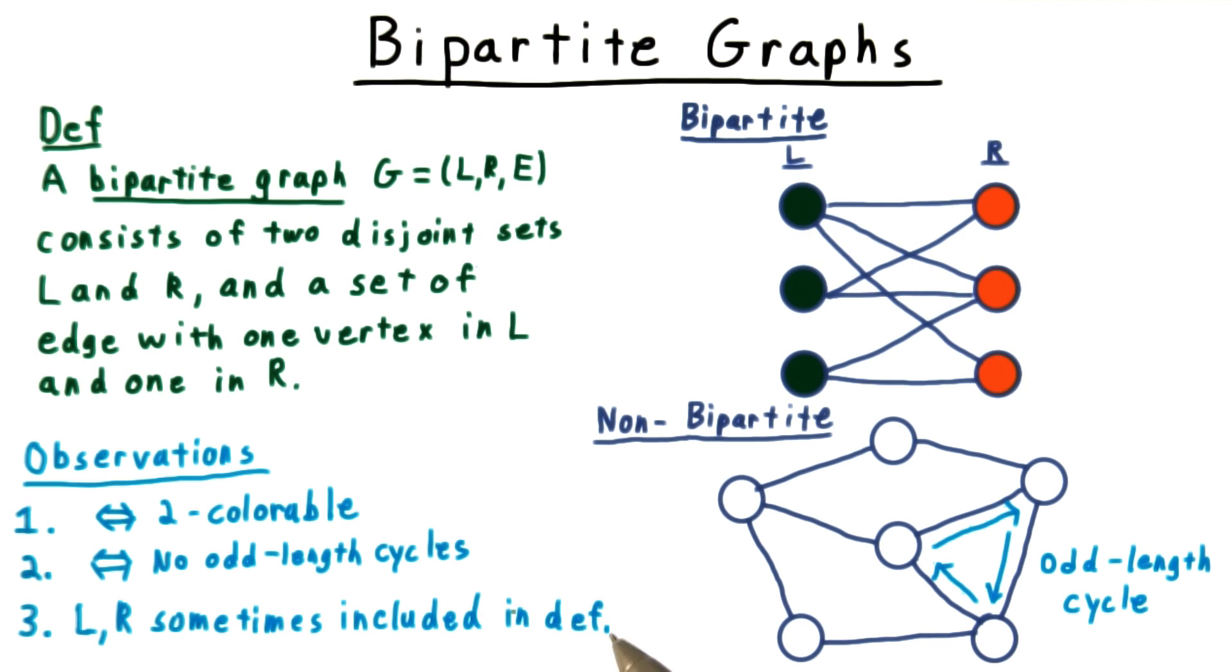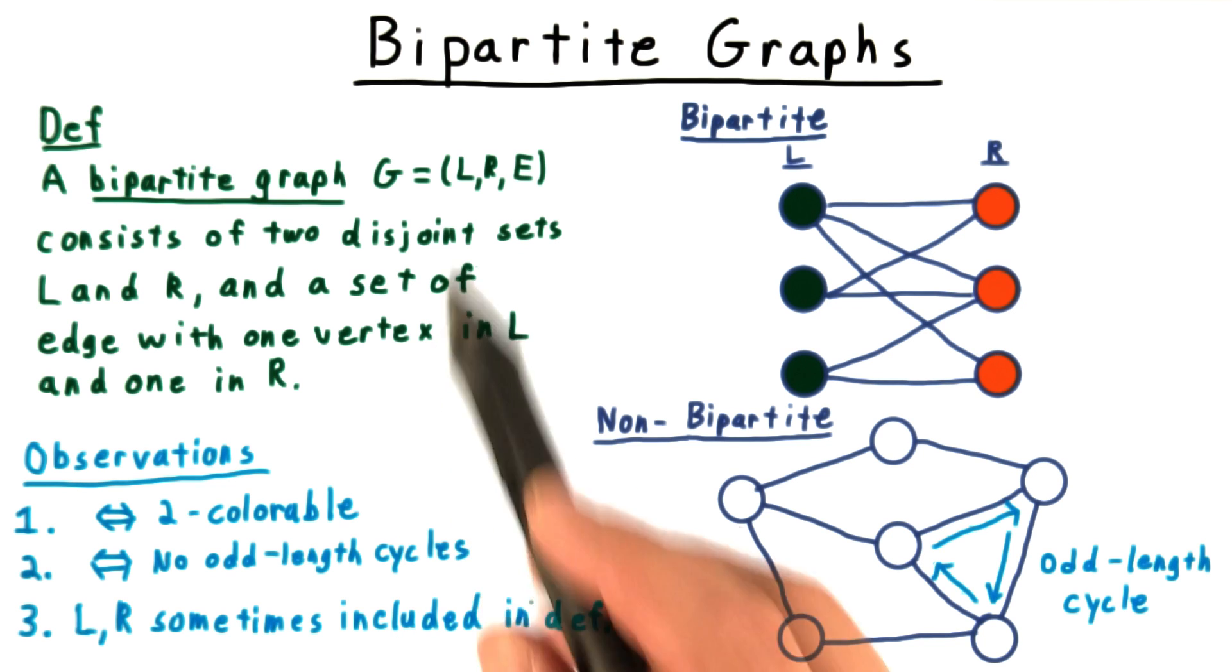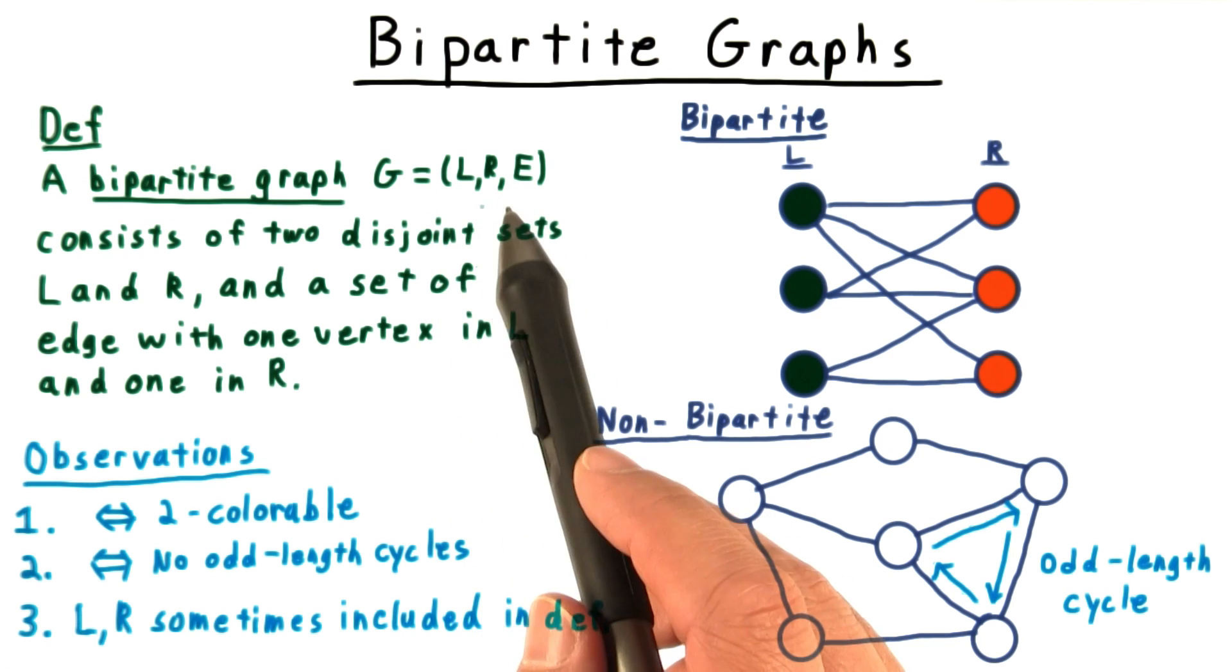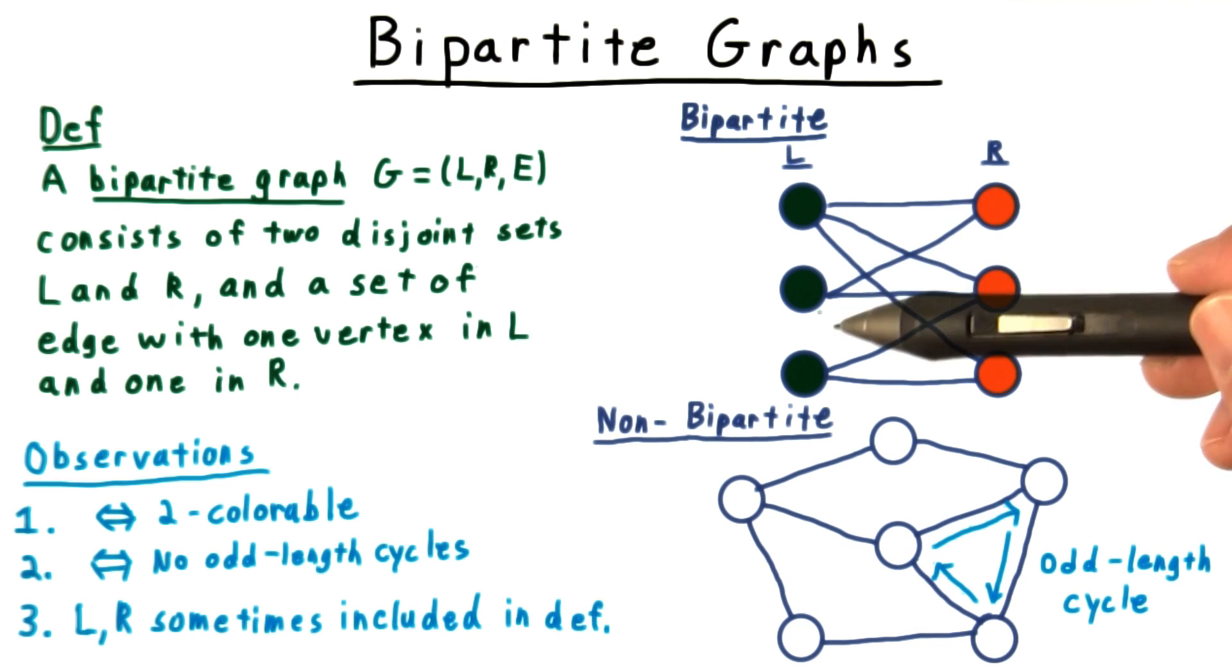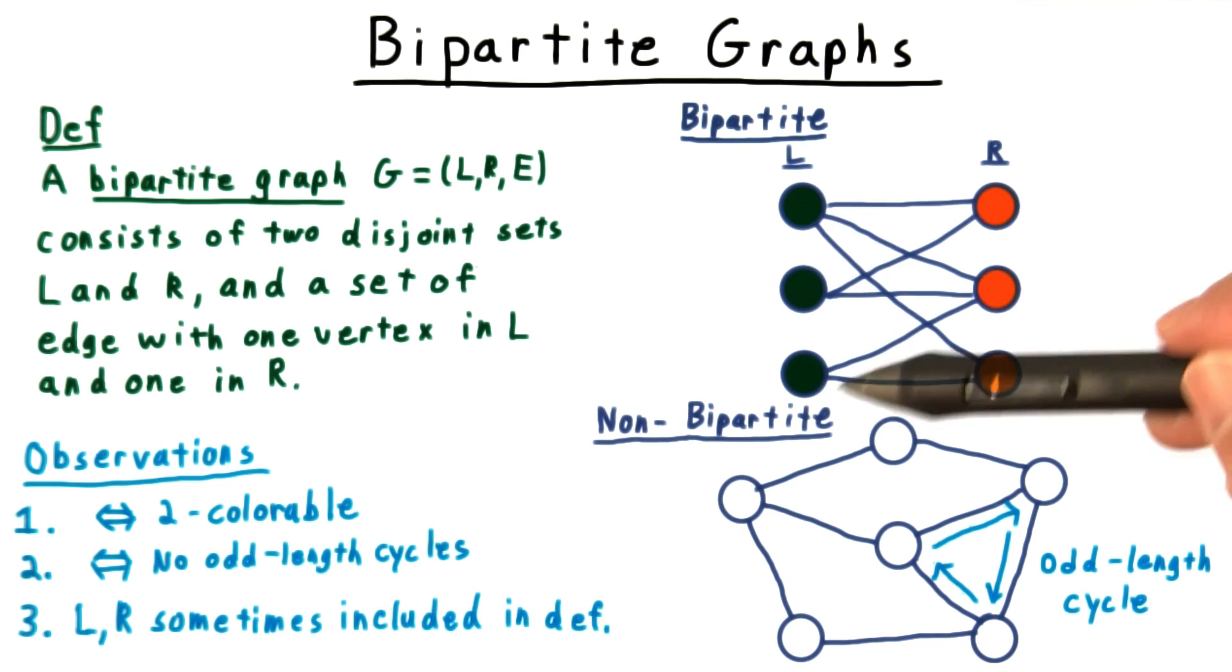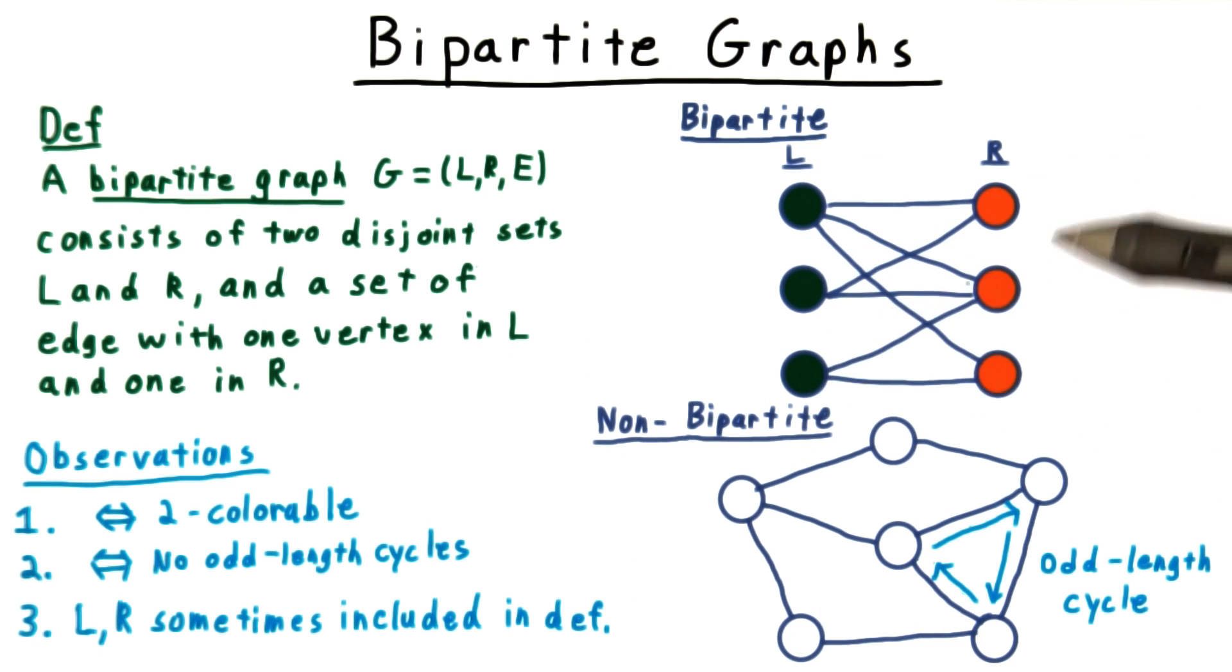For graphs that aren't connected, it's possible that there will be some ambiguity in the partition of the vertices. So sometimes the partition is included in the definition. And we also often draw the graphs with all the vertices in one partition on the left, and all the vertices in the other partition on the right.